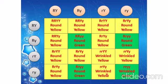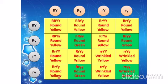These are four characteristics. Count how many round and yellow you get — you get nine round and yellow. Then count round and green — you get three. Then count wrinkled and yellow — you get three. And wrinkled and green — you get one. So the ratio is 9:3:3:1.